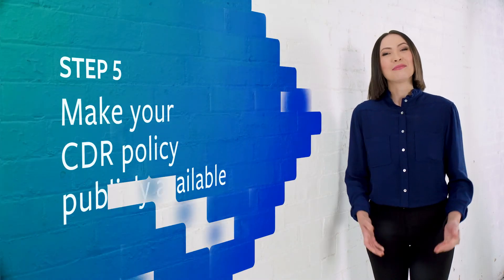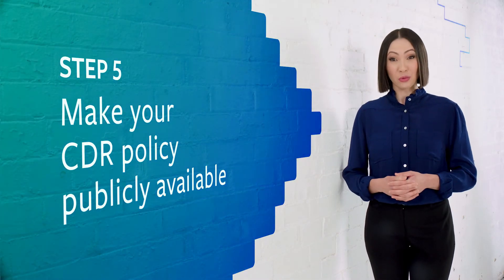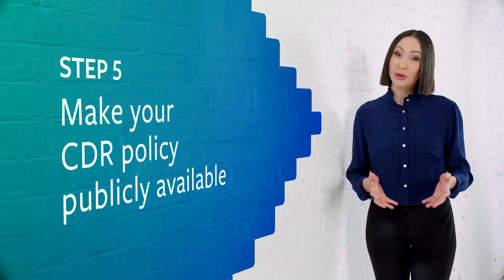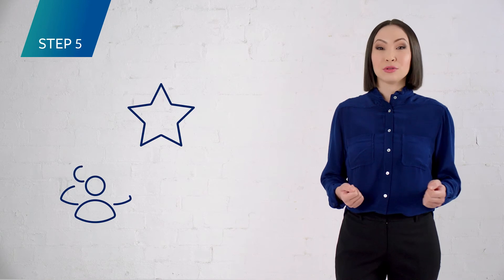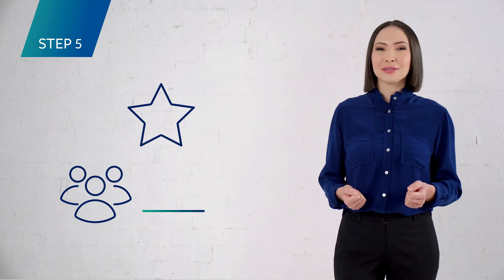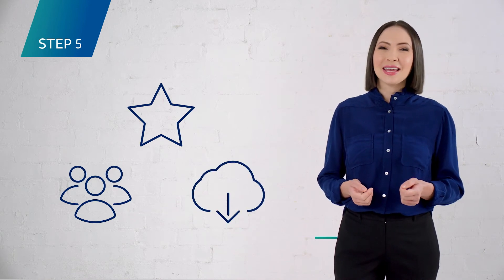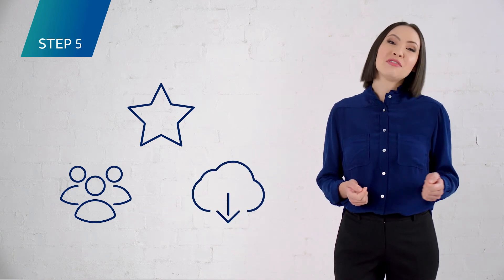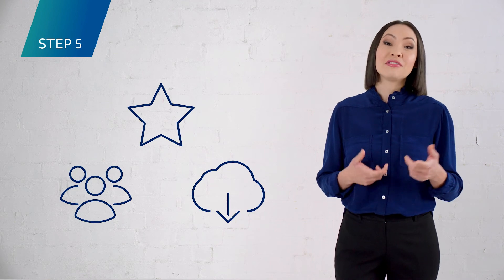Step five: make the policy publicly available on your website or in your mobile app. The CDR policy should be prominently displayed, accessible for all customers and easy to download. You must provide a copy of the policy if a customer asks for it.